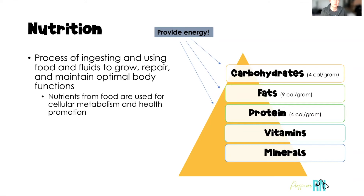We know that there are five types of nutrients. There are carbohydrates, fats, and proteins — those are what we call our energy nutrients. Our body craves and functions best when carbohydrates are used for energy, but fats and proteins can also be used for energy. Then there are vitamins and minerals, which are essential because without them our body can't convert those carbs, fats, and proteins into energy.